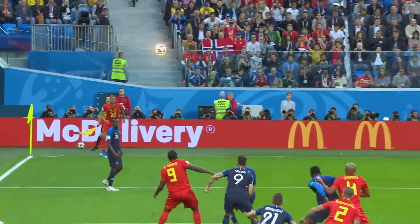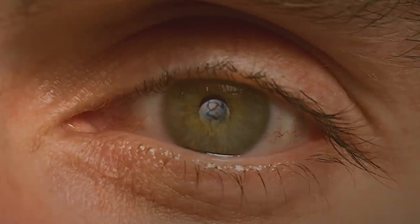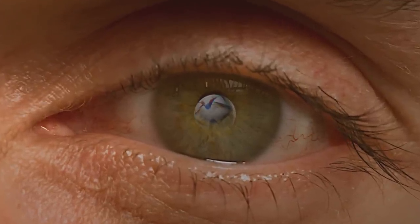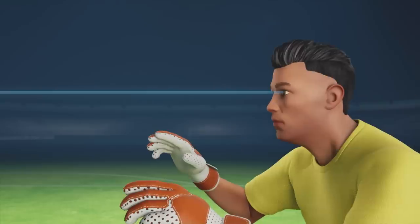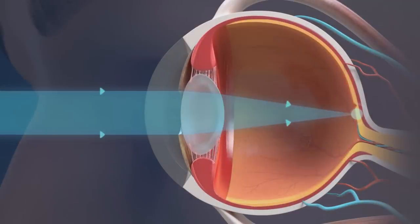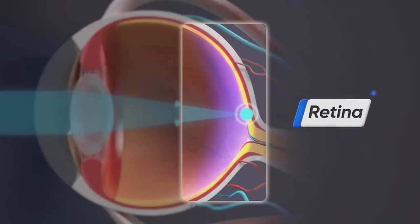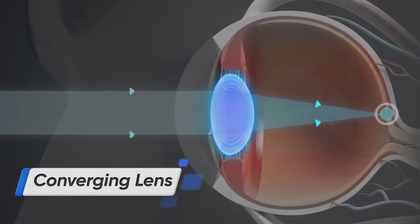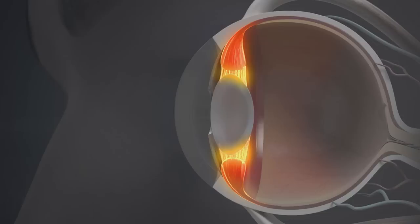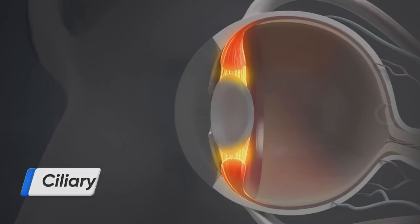From the moment the ball is kicked, the eye is always on the ball. Light rays reflect off the ball and enter the eye to focus on a light-sensitive layer on the back — the retina — thanks to its converging lens. Plus, around the eye, a ring of smooth muscles exists called the ciliary muscle.